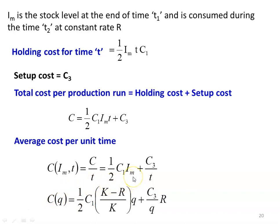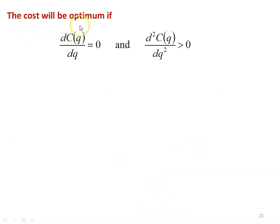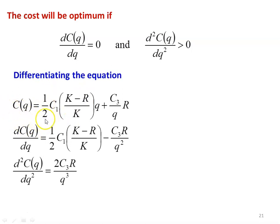Substituting the value of I_m from the previous definition: C = (1/2) × c1 × (k minus r)/k × q + (c3/q) × r. The cost will be optimum if dC/dq = 0 and d²C/dq² is greater than 0. Differentiating the equation with respect to q: dC/dq = (1/2) × c1 × (k minus r)/k minus c3r divided by q². Differentiating again: d²C/dq² = 2c3r / q³, which is positive.